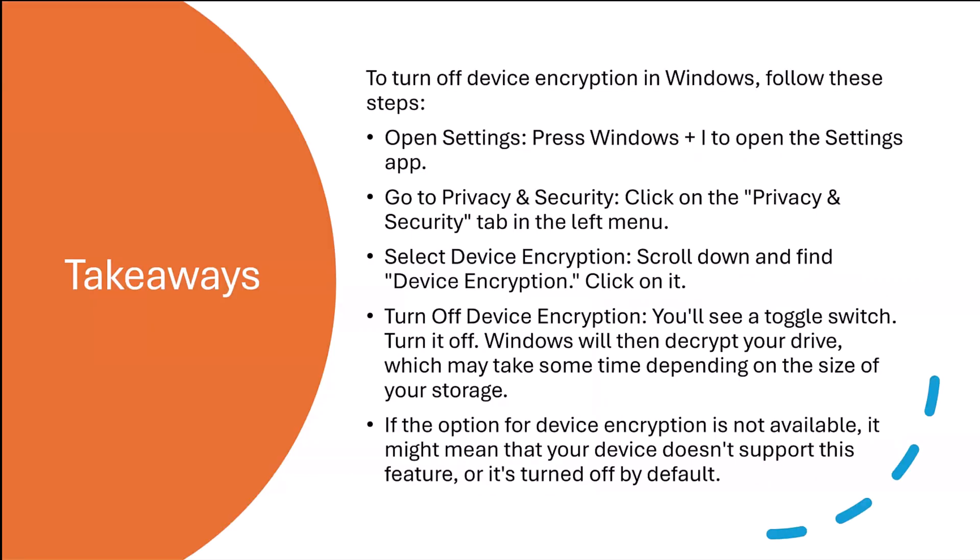To turn off device encryption in Windows, open Settings (press Windows + I), go to Privacy and Security, select Device Encryption, scroll down to find it, and toggle it off. Windows will then decrypt your drive, which may take some time depending on the size of your storage. If the device encryption option is not available, it might mean your device doesn't support this feature or it is turned off by default.